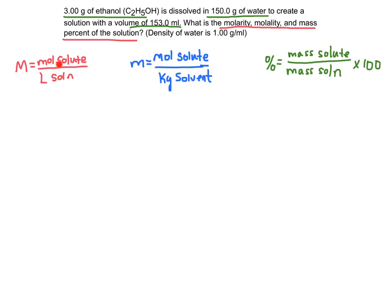Let's start with molarity. We're going to need the moles of solute — in this case ethanol, which is being dissolved into water, making water the solvent — and the liters of solution. The liters of solution is given to us in the problem: 153 milliliters. Converting from milliliters to liters we divide by 1000, giving us 0.153 liters.